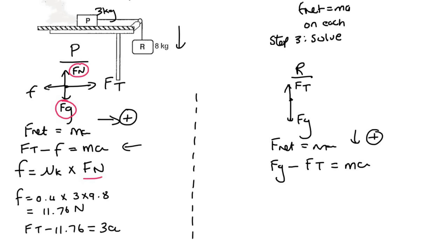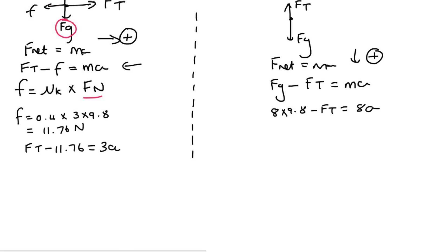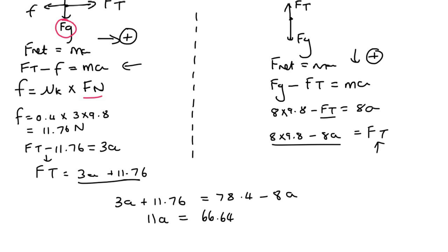And then for this next one, we know that the gravity is 8 times 9.8 minus the tension force equals to 8A. Now we just need to solve these simultaneously. So I'm going to get FT by itself. That would be 3A plus 11.76, and then FT equals to 78.4 minus 8A. I can then make these two expressions equal to each other because they're both equal to FT. So we can say 3A plus 11.76 equals to 78.4 minus 8A. Then I'd get 11A on the left and 66.64 on the right hand side. And then if we had to divide by 11, we should get 6.06 meters per second to the minus 2.